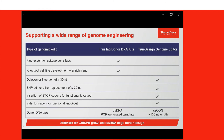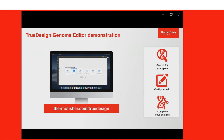The TrueTag kits utilize long double-stranded DNA donors generated from PCR amplification from a provided template, whereas the standalone edits supported by the TrueDesign software utilize single-stranded DNA donors of around 100 nucleotides in length that can be ordered directly from the software. I'm now going to jump over to the software and demonstrate how to use it with the TrueTag kits, as well as using it on its own for precise gene editing.